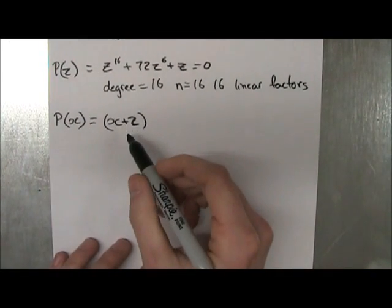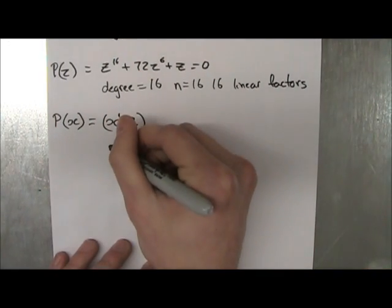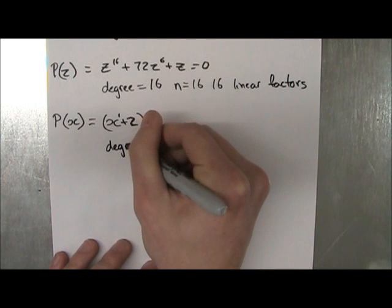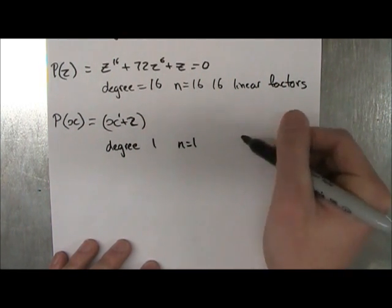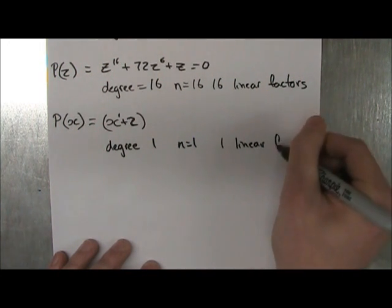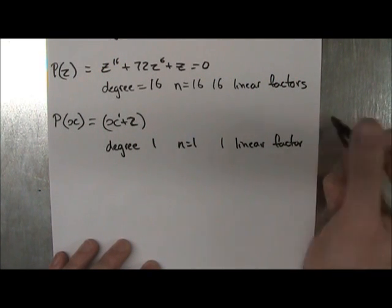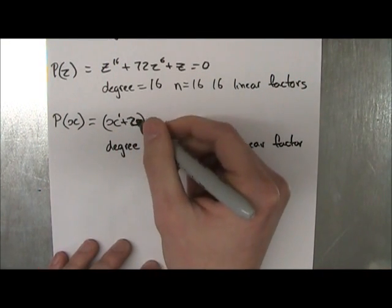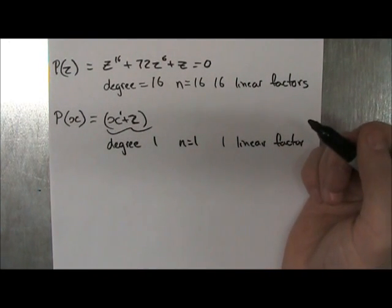Okay, how about this question? We have x to the 1, which means our highest power is of degree 1, which means n is equal to 1, which means this has one linear factor. And because it only has one linear factor, and it's already x plus 2, this is the linear factor. So you wouldn't have to break this down into factors at all.